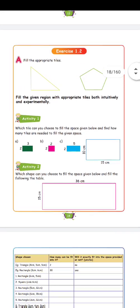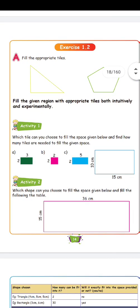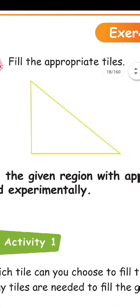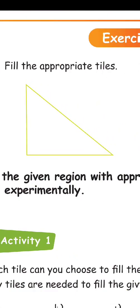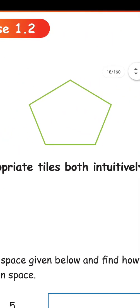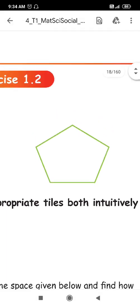Next exercise: fill in the appropriate titles. First, we use an isosceles triangle with a perfect 90 degrees. Next shape is a pentagon — it has 5 sides: 1, 2, 3, 4, 5 sides. This is a pentagon.